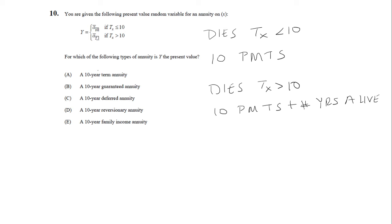Now let's look at the answer choices. Answer choice A is a 10-year term annuity. Well, if we just had the first part, this would be a 10-year term annuity, but we also have the second part, so that does not make it a 10-year term annuity.